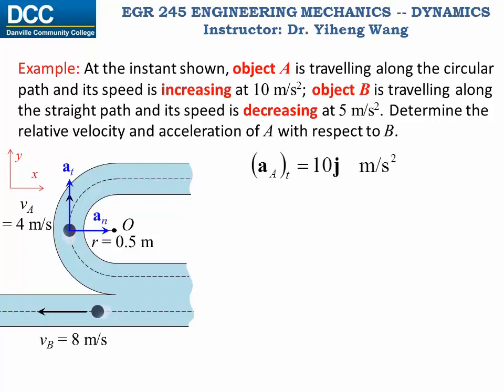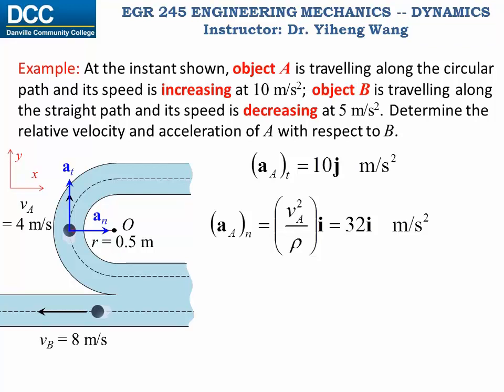And the normal acceleration of object A, An, is evaluated by the equation v squared over rho, rho being the radius of curvature, and it can be calculated to be 32i meter per second squared. Therefore for object A, its acceleration in Cartesian vector form is 32i plus 10j meter per second squared.